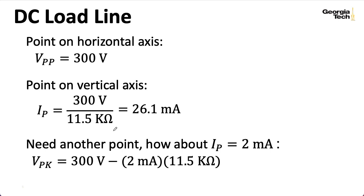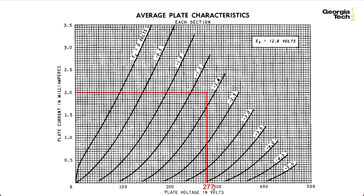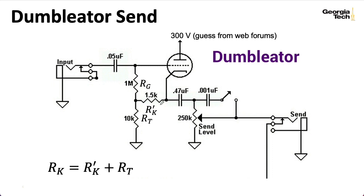So how about two milliamps? So if we assume that we have 300 volts, but we're losing 2 milliamps times 11.5 kiloohms across the resistor, that will correspond to a voltage of 277 volts. So I now have two points. One of my points is at a current of 2 milliamps and a voltage of 277 volts. The other point is at 300 volts. So if I draw a line between these two points, I wind up with something that looks like this. So notice this is a lot steeper than the lines we drew for common cathode amps, and that's because the overall resistance is a lot lower here.